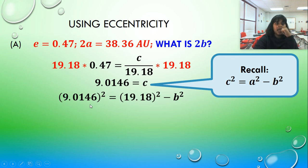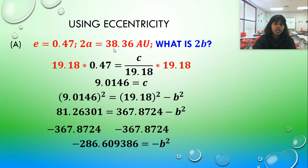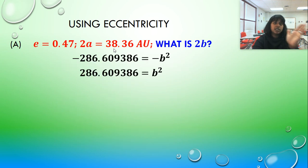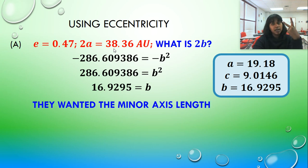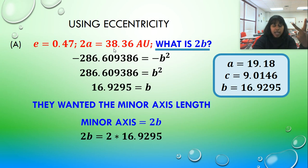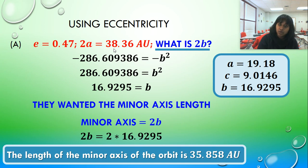So I plug in what I knew. This value came from your C squared. This value came from your A squared. And where did A come from? It came from the length of the major axis, which was given. So I finish myself using a calculator. I deal with the negatives. I square root. And I end up with B is equal to technically plus or minus 16.9295. But if we know B, we can multiply by 2 to get the minor axis length. So we got our answer. The length of the minor axis of the orbit is 35.858 AU.